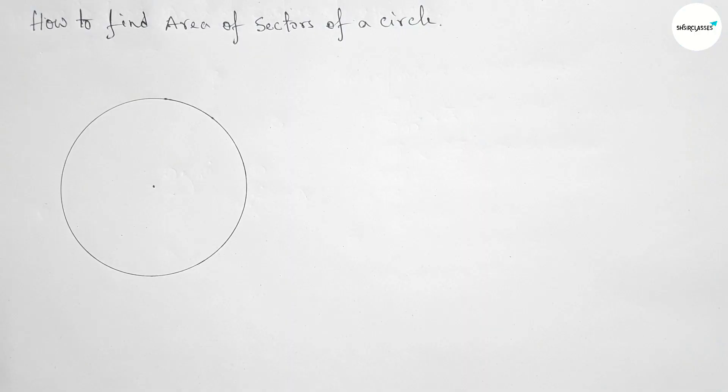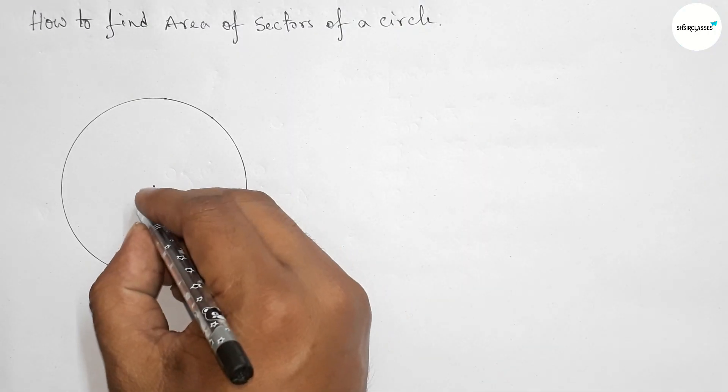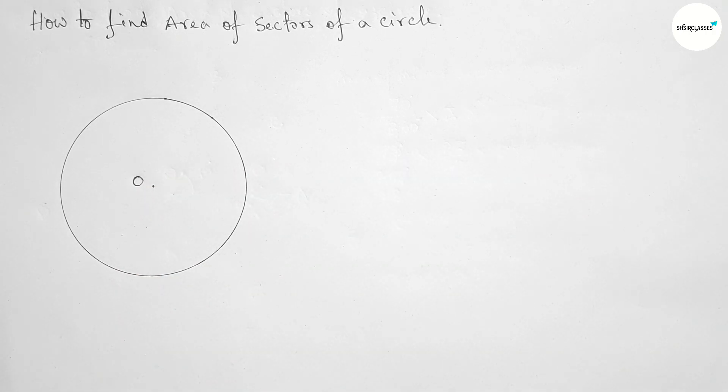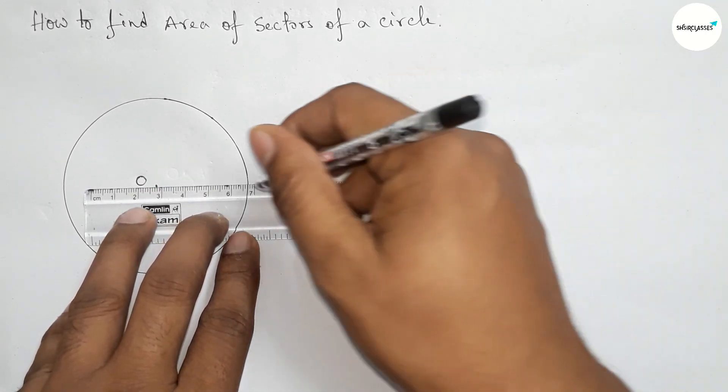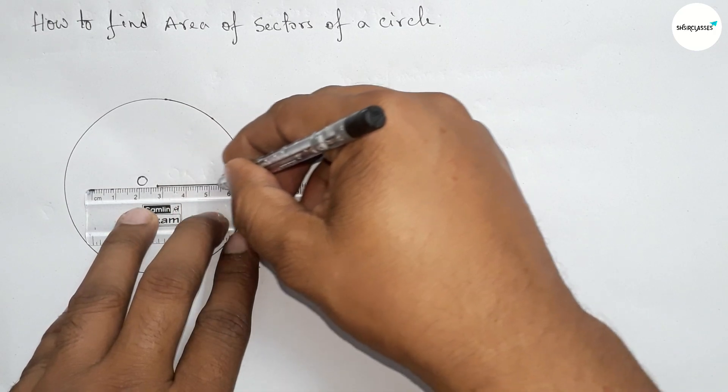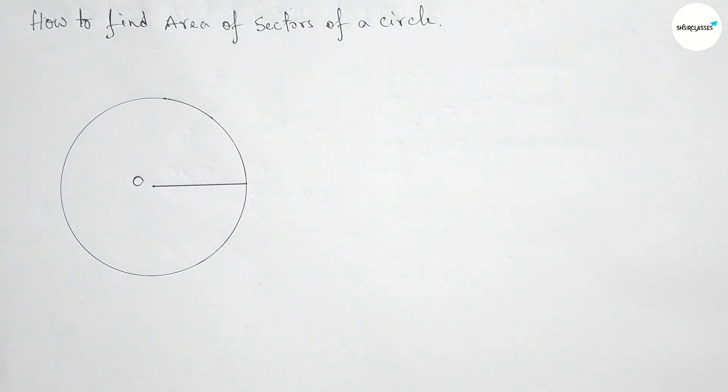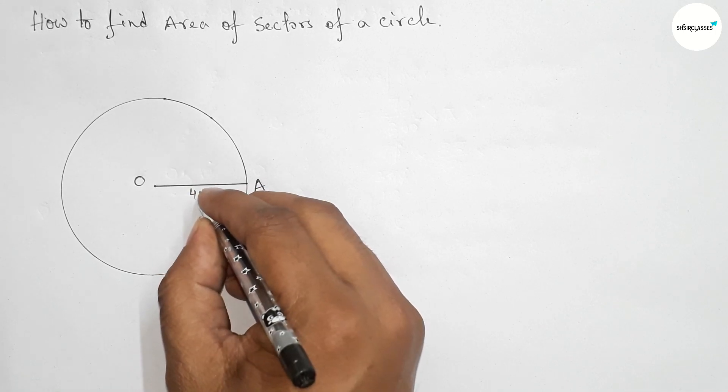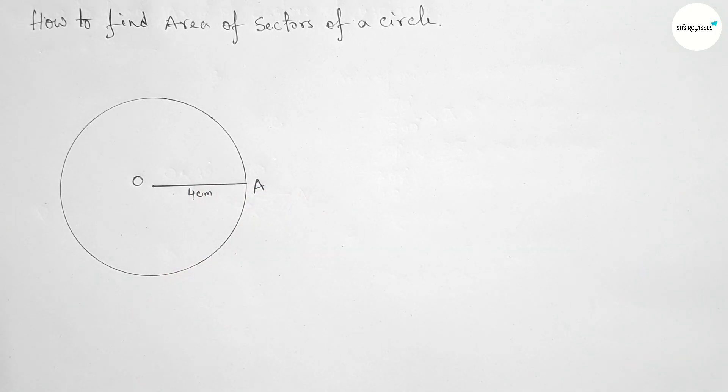And this is a perfect circle. Take the center O. Now join the radius from circumference to center. This is the radius of the circle and label point A. This is 4 centimeters.